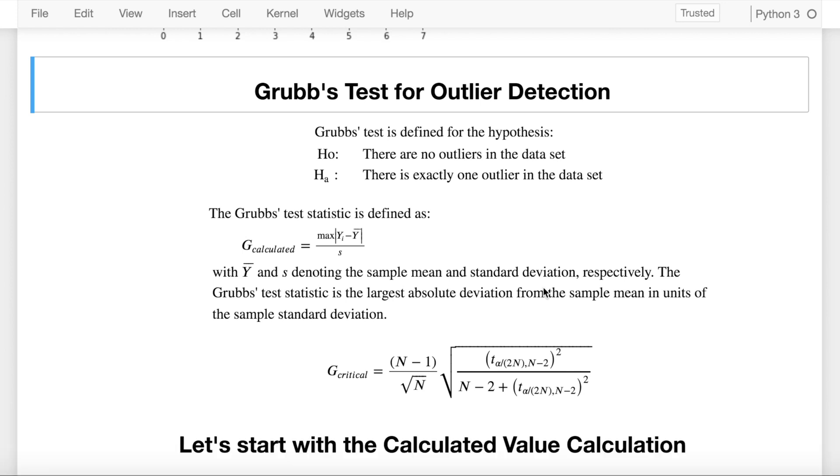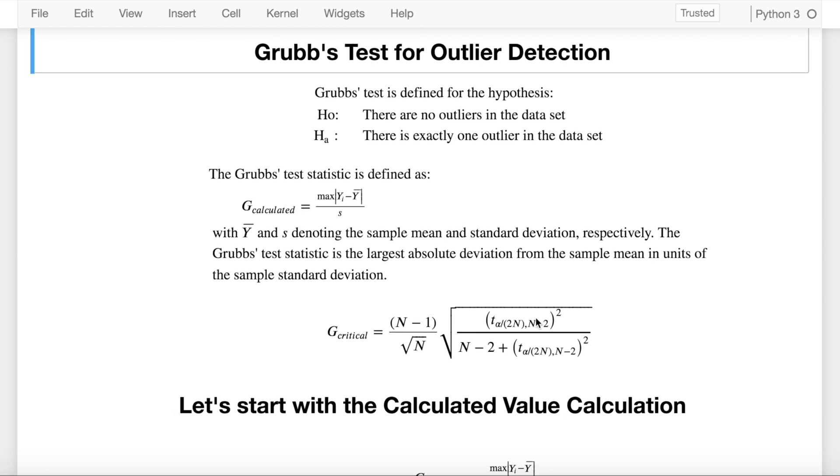For any hypothesis test, there is a calculated value and a critical value. Grubbs test also has a calculated value and a critical value. Now the calculated value of Grubbs test or the Grubbs test statistic is defined as the max of yi minus y bar divided by s, where y bar is the mean of your whole distribution, y is the actual point values of your dataset, and s is your standard deviation.